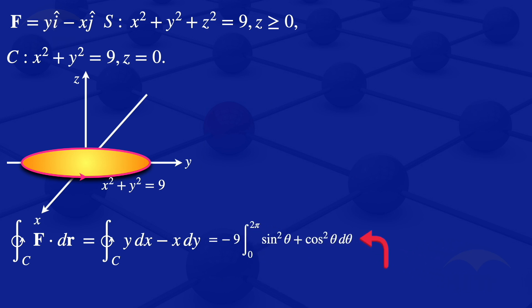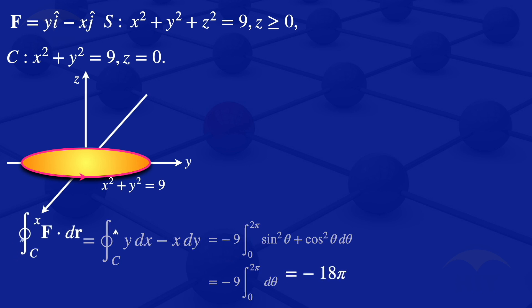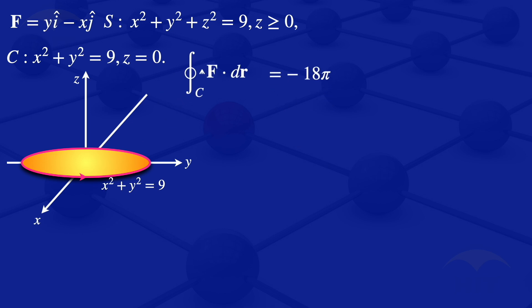Since sin²θ + cos²θ = 1, the integral simplifies to -9 times the integral from 0 to 2π of dθ. Integrating gives -9 × [θ] from 0 to 2π, which yields -9 × 2π = -18π. So the integral of F·dr along the closed curve C equals -18π.